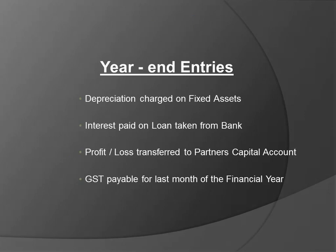Year-end entries include depreciation charged on fixed assets, interest paid on loans taken from the bank, profit or loss transfer to partners' capital accounts, and GST payable for the last month of the year. Basically, GST of the last month, that is March, is generally paid in the month of April, so we'll discuss how this entry can be reflected in Busy.